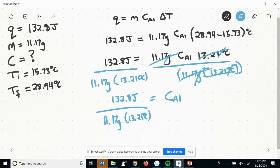13.21. What I'm left with is essentially, especially keeping in mind significant figures, 0.90000. And the units are joules over grams degrees Celsius. And that's my specific heat of aluminum.